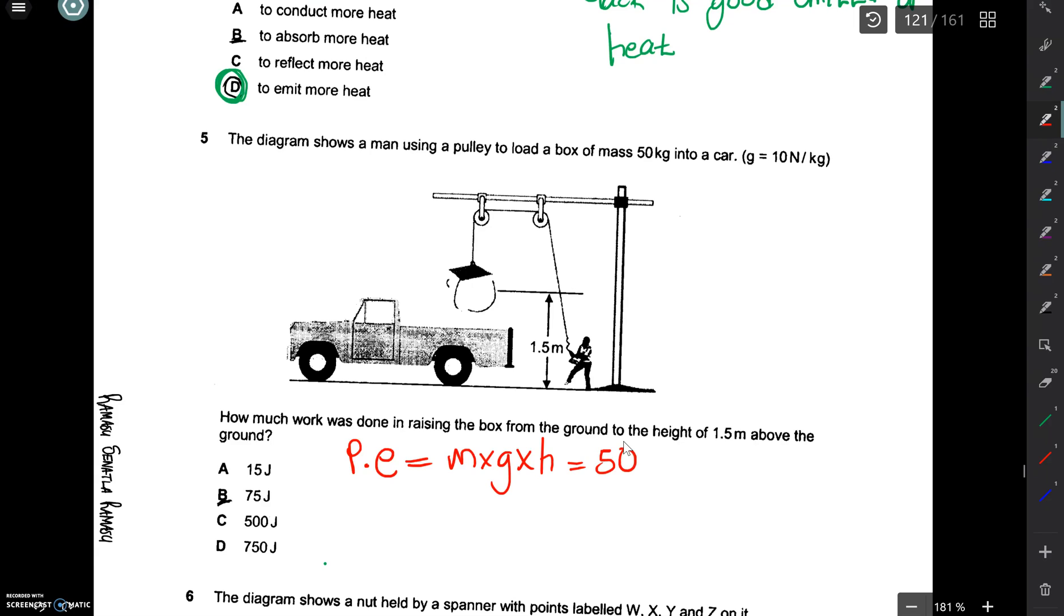Our mass here is given as 50 kg. g is given as 10 Newtons per kilogram. Height is 1.5 meters. You put this in your calculator. It gives you 750 Joules. So your answer is D. 750 Joules.